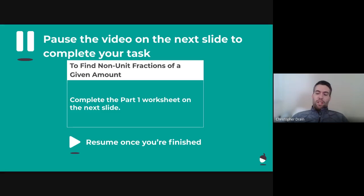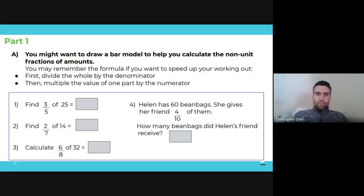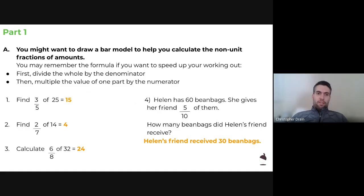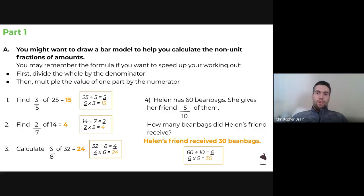Okay, pause the video on the next slide to complete a task. Okay, hopefully you managed to finish the task and draw a bar model for each one. What you would find is that for question one, three fifths of 25 comes to 15. That's because when you draw your bar model, it's 25 in total. And when you distribute the 25, each part had five in it. 25 divided by five equals five. Then, because you want three fifths, five times three equals 15. I'm hoping here, though, that you drew a bar model to get your result. Okay, pause it here, and you could check your working.